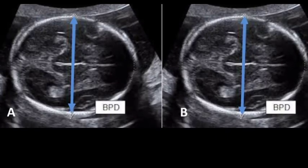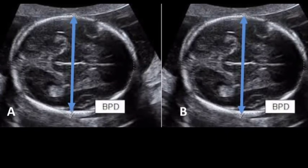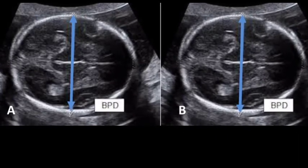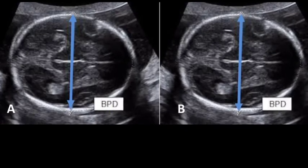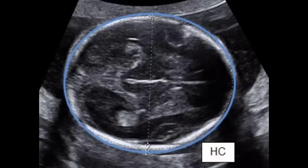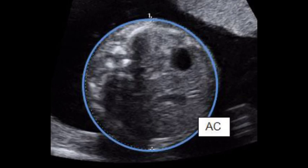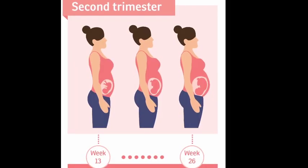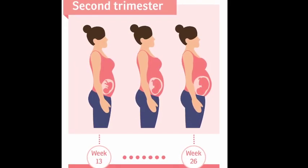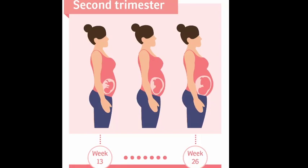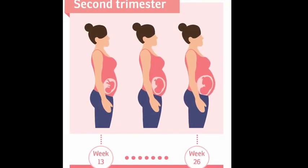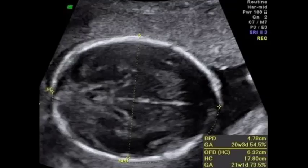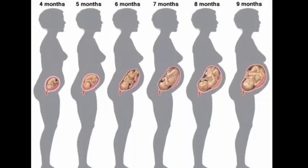Biparietal diameter is one of the basic biometric parameters used to assess fetal size. Biparietal diameter, together with head circumference, abdominal circumference and femur length, are computed to produce an estimate of fetal weight. In the second trimester, this may be extrapolated to an estimate of gestational age and an estimated due date (EDD). Biparietal diameter in the fetus has been reported to correlate well with gestational age.